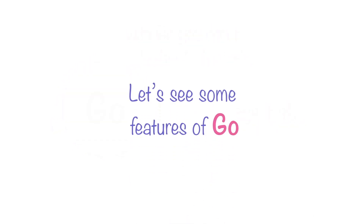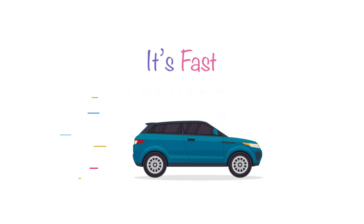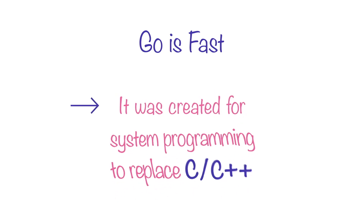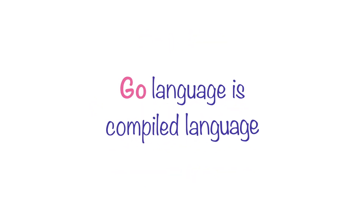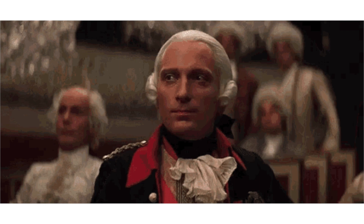Let's walk through some features of Go language which are the main highlights. It's fast — super fast. Go language was primarily created for system programming to replace C and C++. So it is just like C and C++ but far better. Go is a compiled language like C and C++ and does not require interpretation, making it super fast.